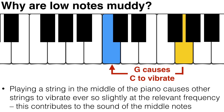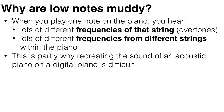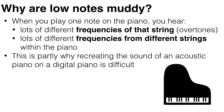And this happens going up as well as going down — so striking the C string can cause the G string to begin vibrating. So when you play one single note on the piano, not only are you hearing lots of different frequencies from that single note, but you're also hearing lots of different frequencies from lots of different strings within the piano. And this is partly why recreating the sound of an acoustic piano on a digital piano is actually really difficult.